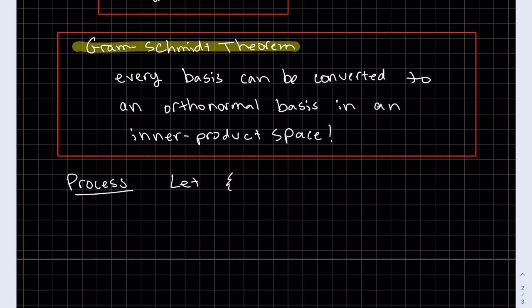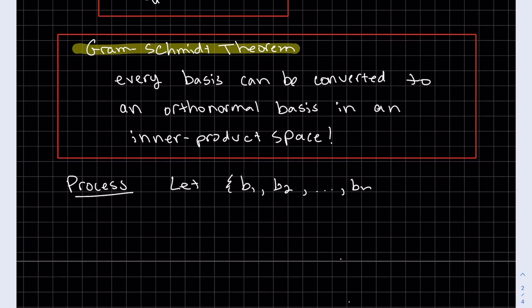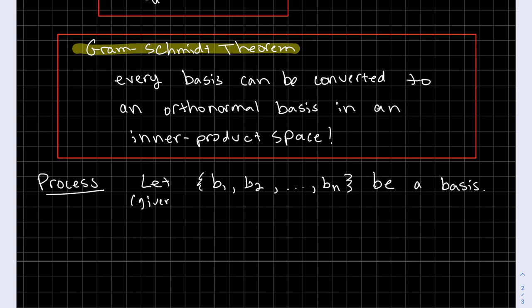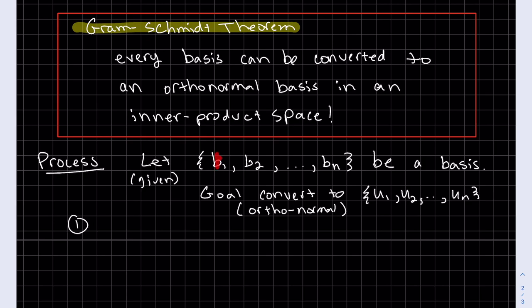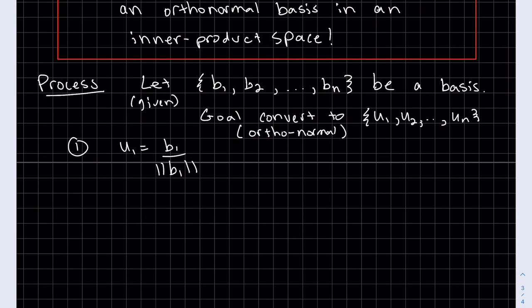We're going to let our basis be {b1, b2, ..., bn}. This is given. So given basis. Our goal is to convert it to orthonormal. Our first step is to convert this one to normal. Pretty simple for the first step: u1 = b1/||b1||. Now I'm going to show two ways how to do step two.